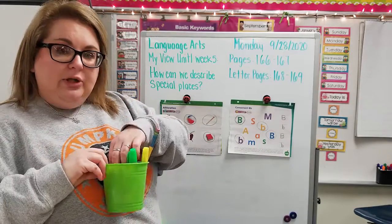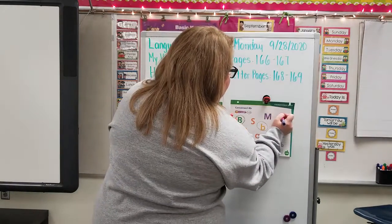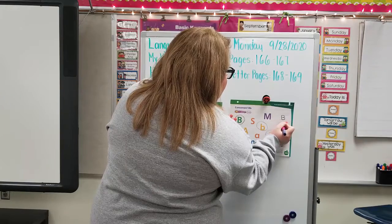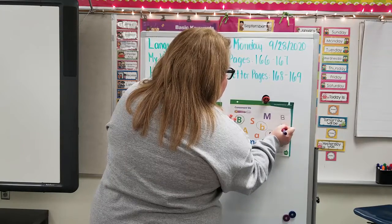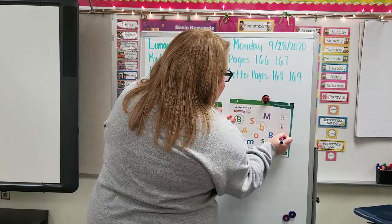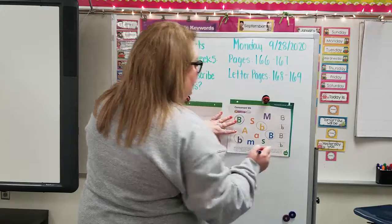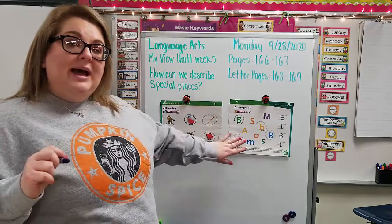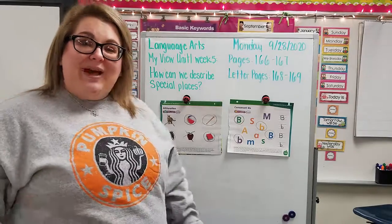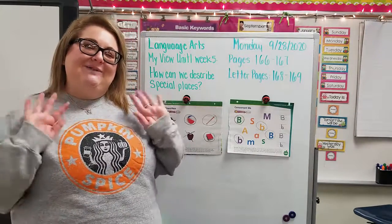Now take your blue crayon and trace it again. Straight line down, curve it around once, curve it around twice. Little b — straight line down, curve it around once. Big B — straight line down, curve it around once, curve it around twice. Little b — straight line down, curve it around again. Go ahead and trace it with one more color, and I hope you have a fabulous day! I will see you tomorrow on Tuesday for some language arts. Bye, friends!